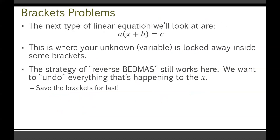The main part of today is a new type of linear equation: A times bracket X plus B equals C. This is where your variable X is locked away inside some brackets. The strategy of reverse BEDMAS still works here — we want to undo everything happening to X. In reverse BEDMAS, you save the brackets for last, getting rid of whatever is attached to the brackets first, which in this case is A.